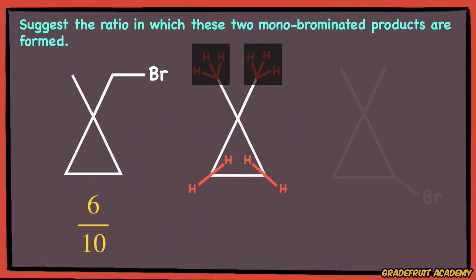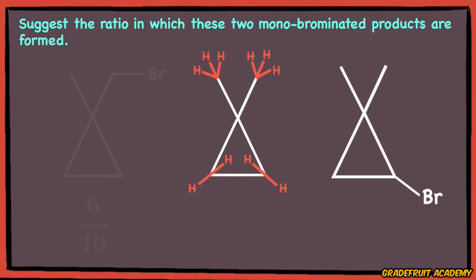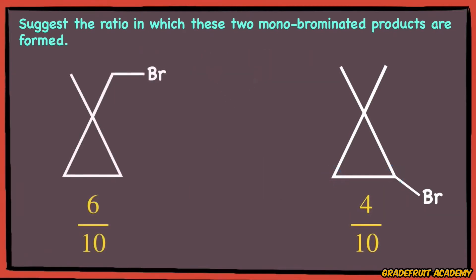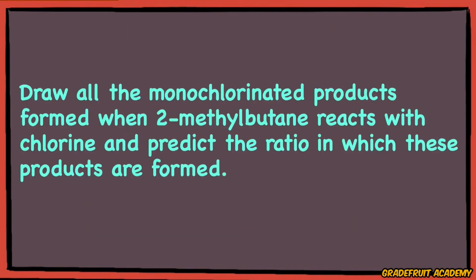So similarly for the compound on the right-hand side, in order for the bromine atom to be attached here, we need to also consider that this bromine atom could also be on the left-hand side of the molecule. So the probability will be 4 out of 10 hydrogen atoms. And after simplifying the ratio, the answer will be 3 is to 2.